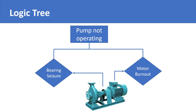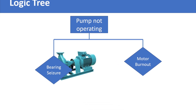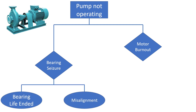Bearing seizure could have been caused by end of bearing life or misalignment of the bearing. This is the point where the Boolean logic gate comes in, giving this method its characteristic name of a logic tree. Bearing seizure can be caused either by end of bearing life or by misalignment — either one of these two reasons could cause the bearing to seize. In this case, OR is our Boolean gate.